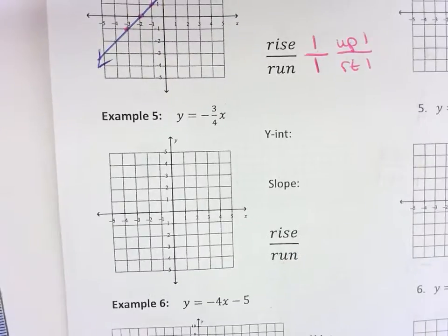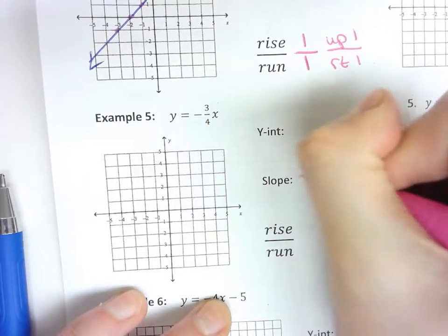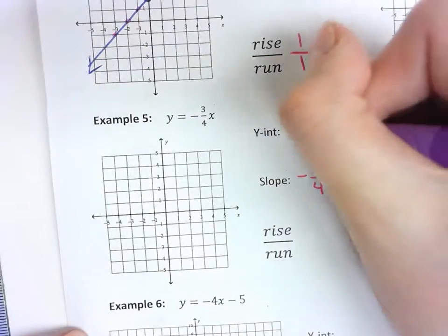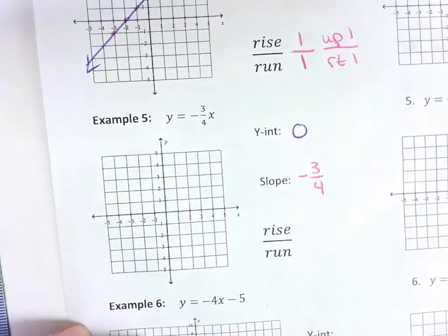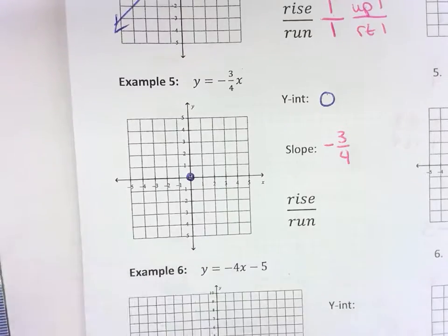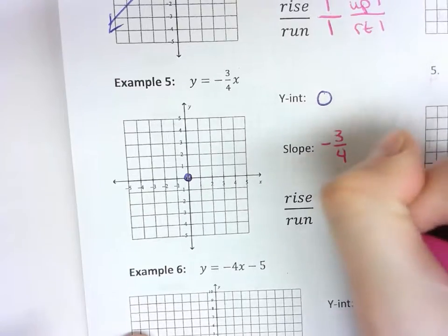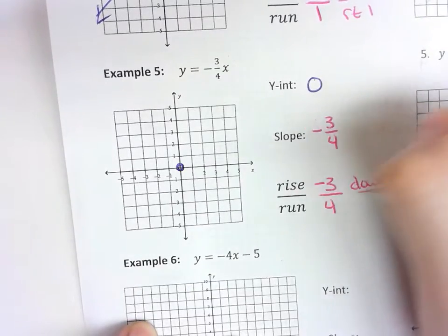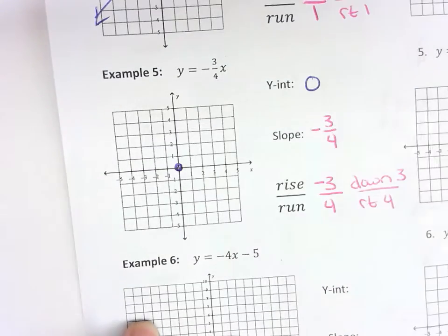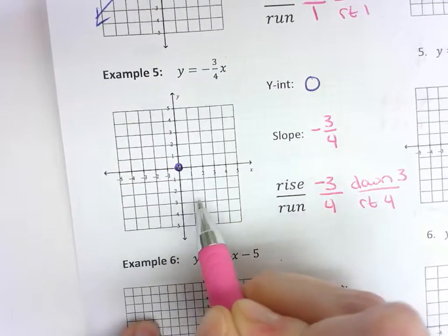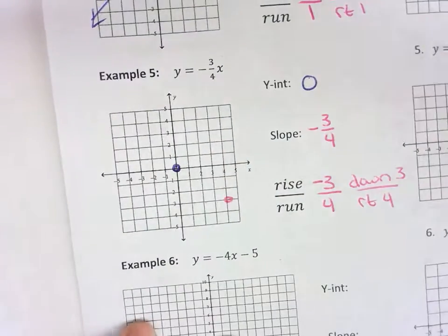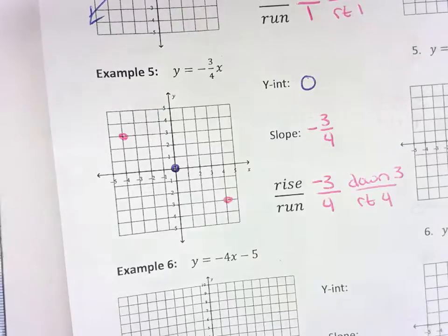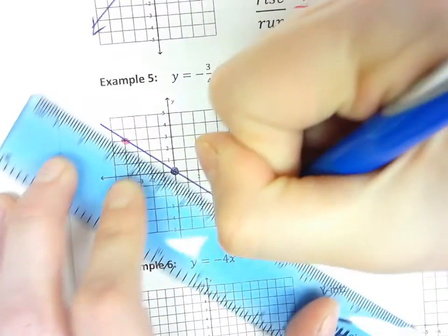For example number 5, there is a number attached to the x, so that's the slope. But there's no adding or subtracting number, which means the y-intercept is 0 — like saying plus 0 — so we start at the origin. Our slope is a negative number, so the negative sign goes with the top number. A rise of negative 3 means we go down 3 units, and we always start by moving to the right for the bottom number. Count down 3 and then over to the right 4. To go the other way, up 3 and to the left 4. Once all points are placed, connect them with a line. Arrows on both ends, all the way through.